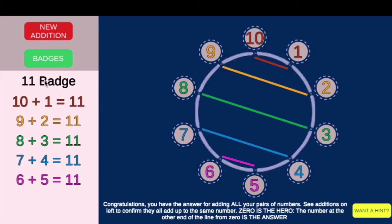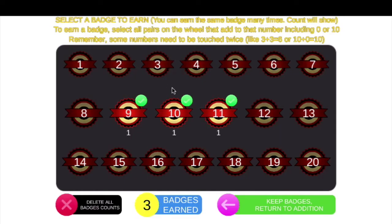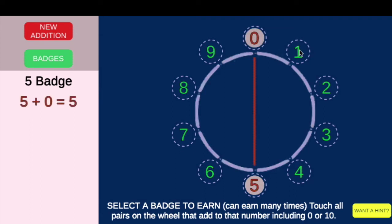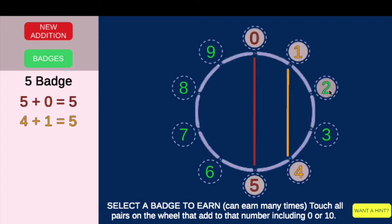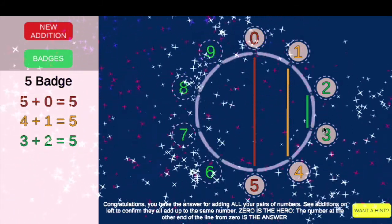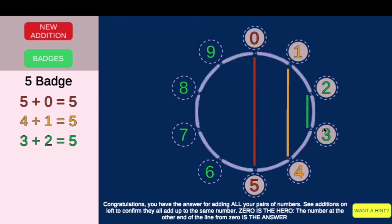Let's do the badges for five. We're going to do five plus zero, of course. And four and one, one and four, two and three — those all equal five. Notice five is really important, like our five fingers of one hand. Fives and tens are the really important ones.